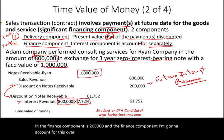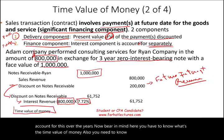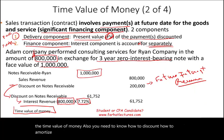Bear in mind you need to know the time value of money concepts, including how to discount and amortize a note — whether it's a notes receivable or a notes payable. The deal is split: the delivery component is $800,000 and the financing component is $200,000, accounted for over the years as interest revenue.